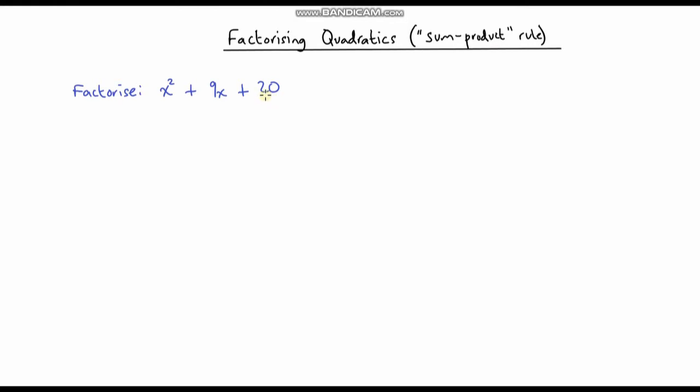I didn't explain to you why it works, so in this video I'm going to go through why this sum product rule works. But before we do that, let's first do one more example just to refresh your memories. Remember, whenever we're factorizing a quadratic that looks like this, we want to identify two numbers that have a sum of this number and a product of this number.